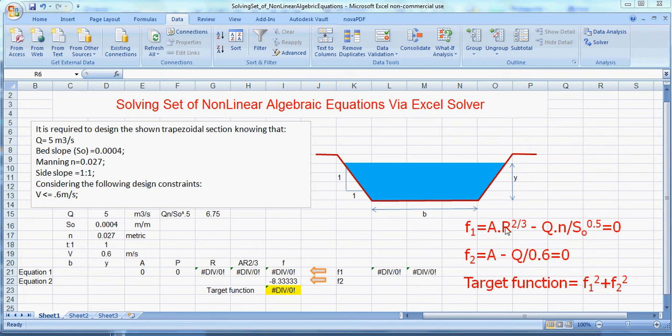In order to develop the first equation dynamically, we developed two cells: one for B, the bed width, and the second one for the water depth, which are the two unknowns.